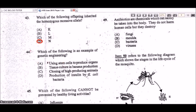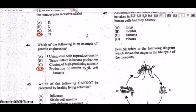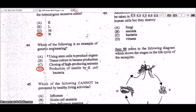Question 44: which of the following is an example of genetic engineering? The answer is D — the production of insulin by E. coli bacteria. This is a common medical application of genetic engineering, involving taking genes from one organism and inserting them into another. The human insulin gene is inserted into bacterial cells; bacteria multiply rapidly, producing large amounts of insulin.